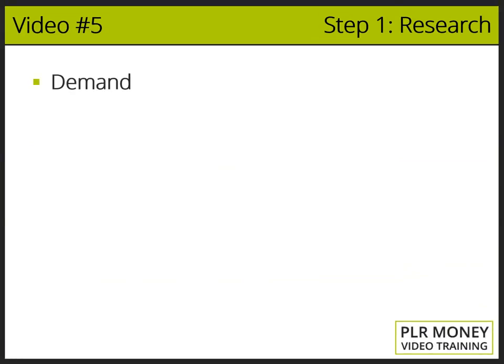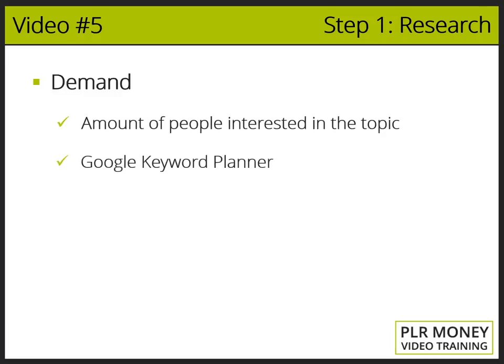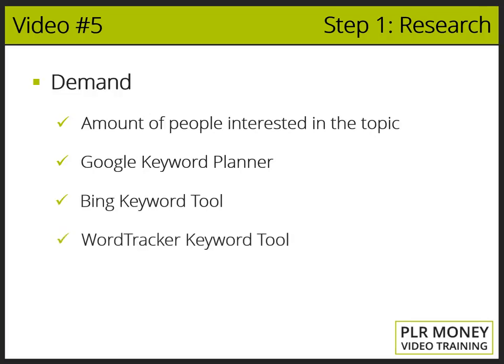For demand, we mean the amount of people interested in the topic. We can use the Google Keyword Planner, which is a keyword tool provided by Google that tells us how interested people are in any particular topic. Other similar tools are the Bing Keyword Tool and the Word Tracker Keyword Tool.